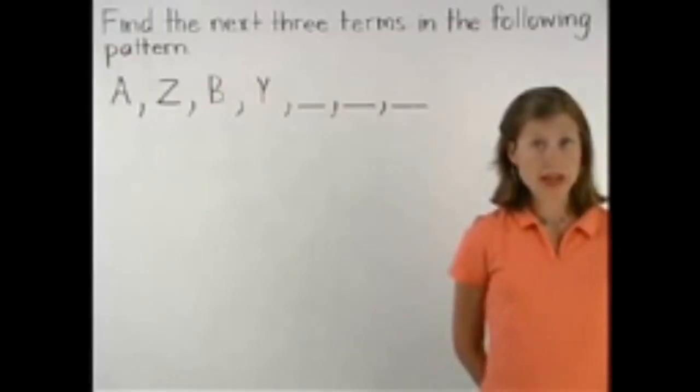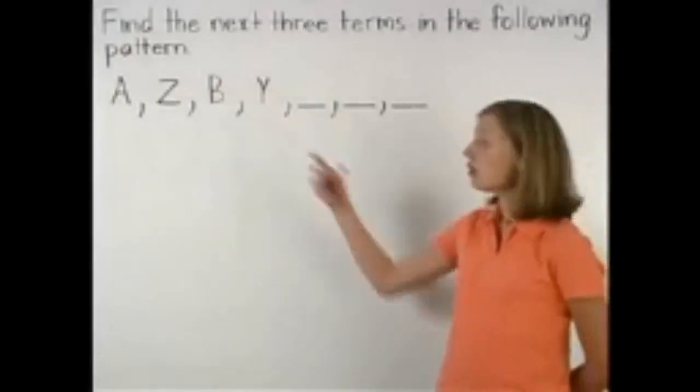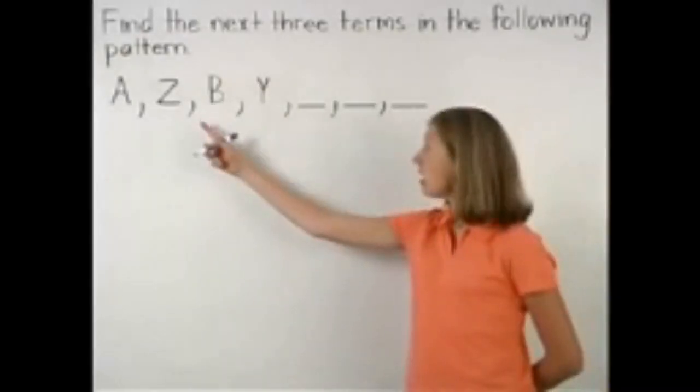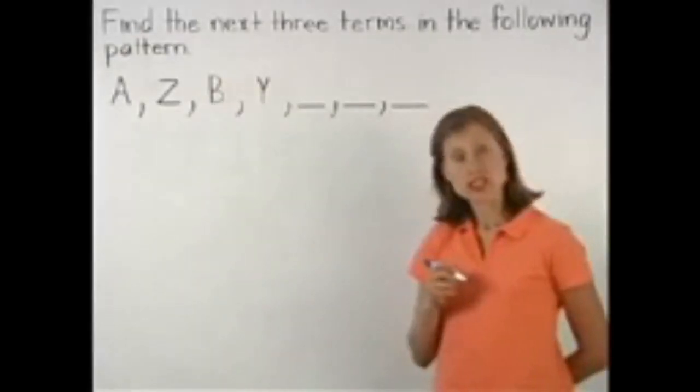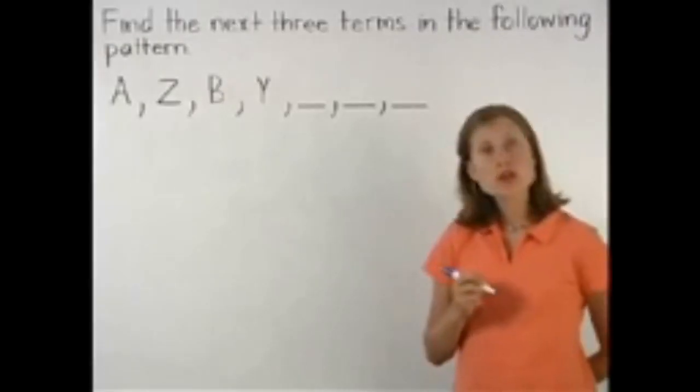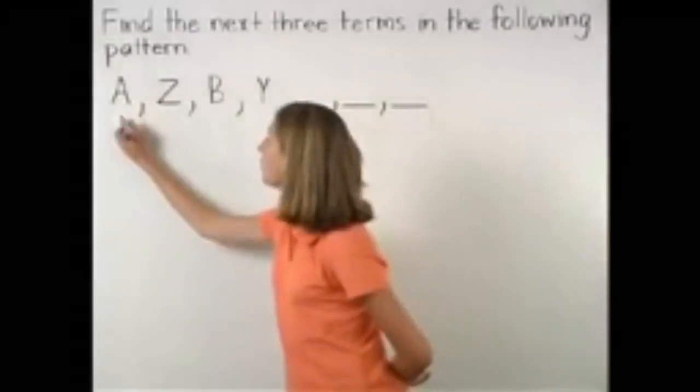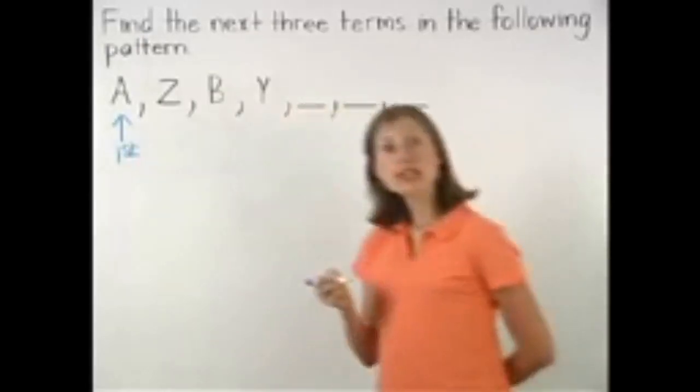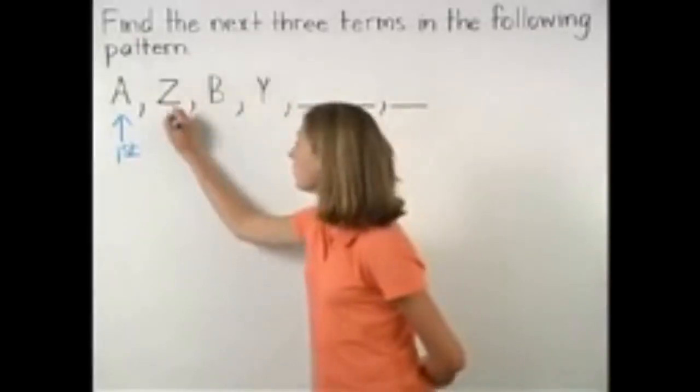Begin by studying the pattern. Here, notice that the first term in our pattern is A and the second term in our pattern is Z. Notice that A is the first letter of the alphabet and Z is the last letter of the alphabet.